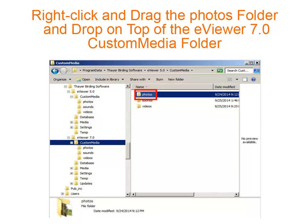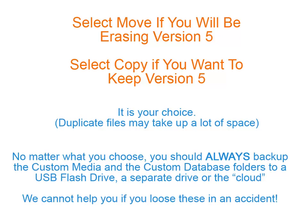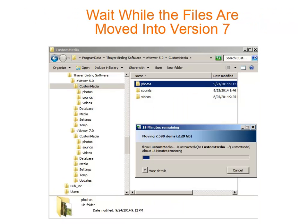Right click the Photos folder, then drag and drop it onto the custom media folder under version 7. You probably want to delete your old version 5 once version 7 is all set to go, so select Move here. If you do want to keep version 5, select Copy here. You should always back up your custom media and custom database folders to a USB flash drive and keep this in a safe place. We just dropped the Photos folder onto something that already had a Photos folder — this is asking if we want to merge the two. The answer is yes. Here we see that the photos from version 5 are currently being copied into version 7. Just wait until this finishes.